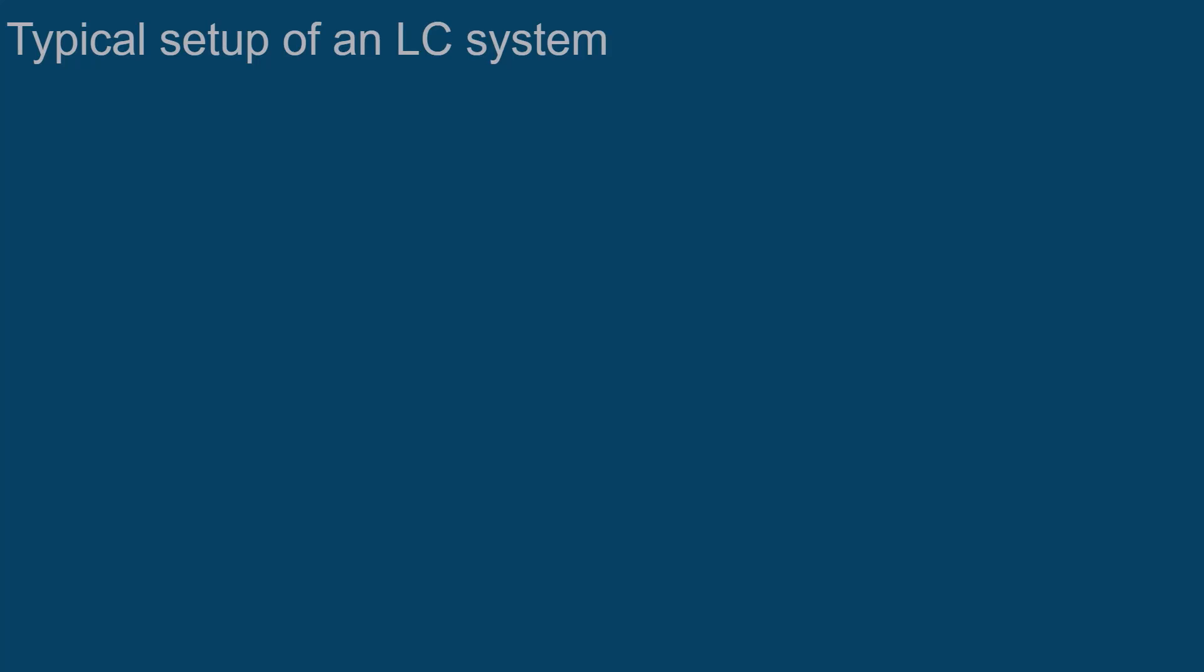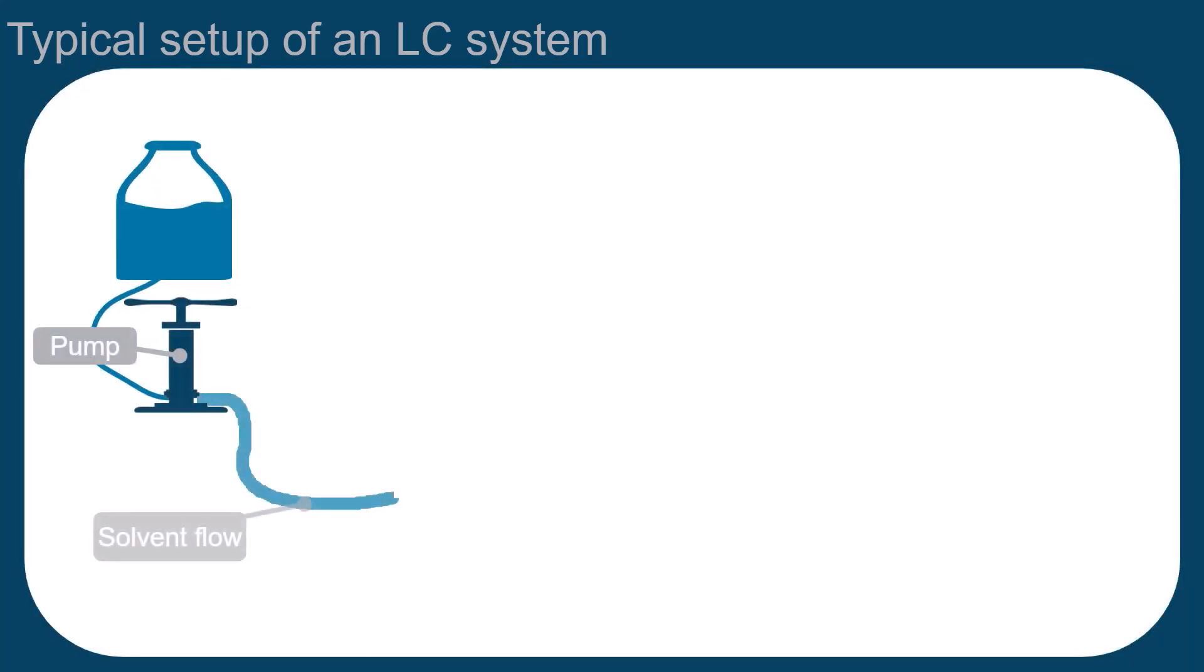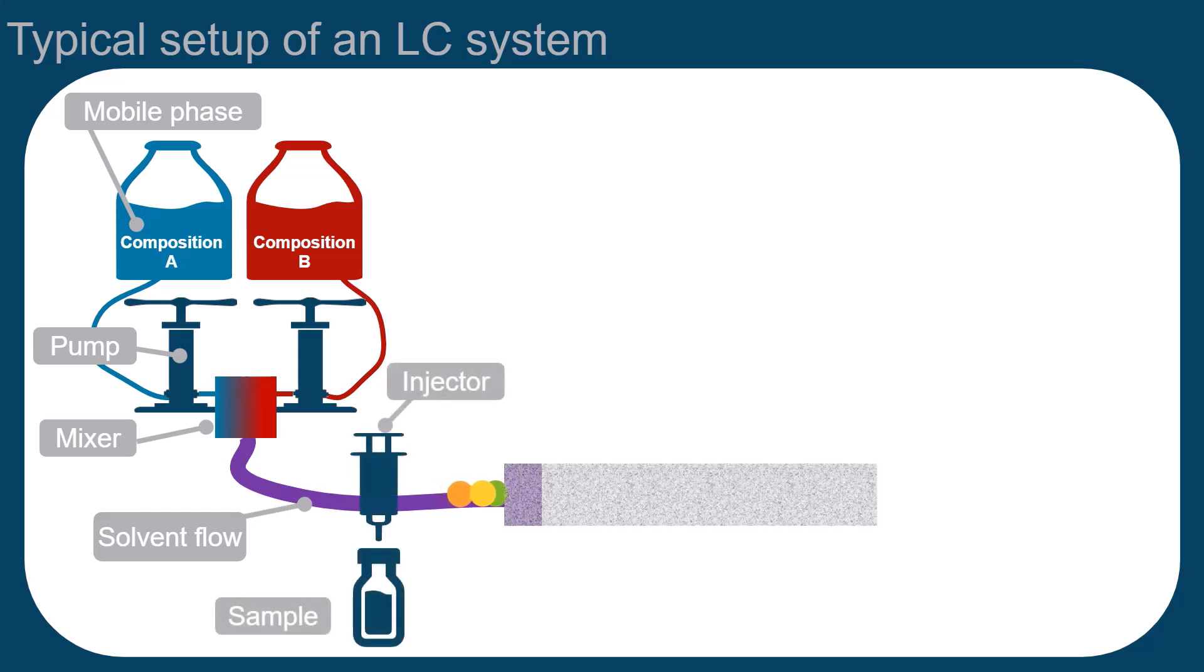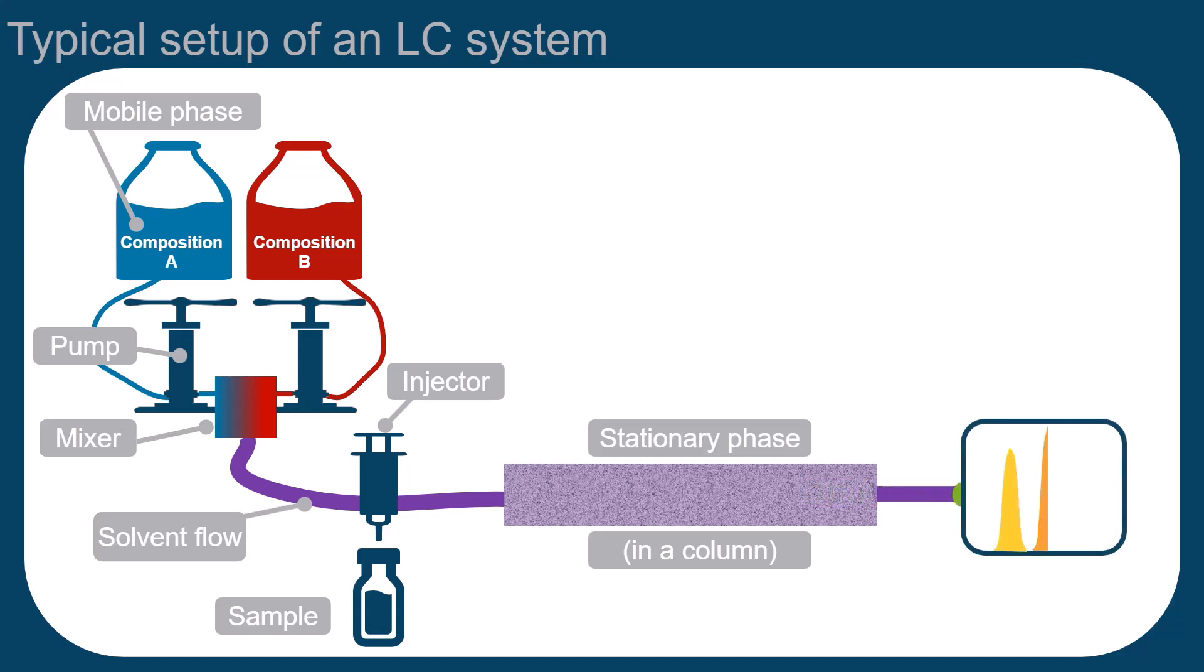This is a schematic representation of a typical LC system setup. The pump produces a solvent flow. The solvent is called the mobile phase. In most cases, two or more mobile phases of different compositions are gradually mixed in the mixer during the LC process. The injector introduces the sample into the solvent flow, which then carries the analytes over a stationary phase that is placed into a column with which they can interact. Finally, the analytes will pass the detector.